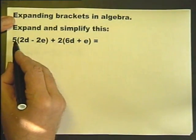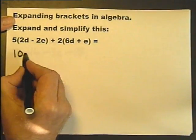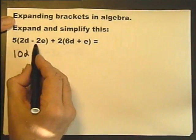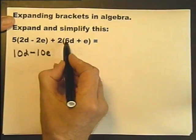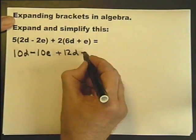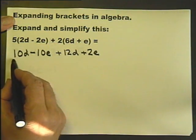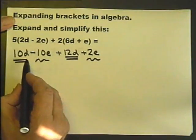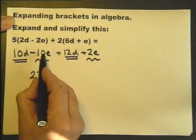Outside this bracket is a 5. It's actually plus 5. So plus 5 times 2D is 10D. Plus 5 times minus. Plus times a minus is a minus. 5 times 2E is 10E. Plus 2 times plus 6D is plus 12D. Plus 2 times plus E is plus 2E. So what have we got here? We've got Ds and we've got Es. So collecting together like terms. 10D and 12D is 22D, minus 8E.